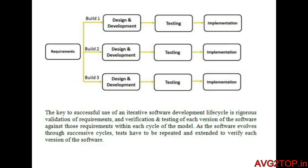The key to success in the iterative software development lifecycle is the validation of requirements and verification and testing of each version of software within the cycle of the model. The software evolves through successive cycles — the more cycles it runs, the more the software is refined. Tests can also be repeated and extended to verify each version of the software.